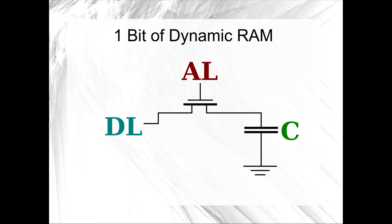This is one bit of dynamic RAM, and there's almost nothing to show. One bit of dynamic RAM is simply an address line and a capacitor. The capacitor stores the one-ness or zero-ness of the bit. To read: we turn the address line high and that one transistor connects the capacitor directly to the data line. To write: we push or sink current through the transistor to bring the capacitor's charge up for a 1-bit or down to zero for a 0-bit.